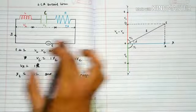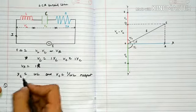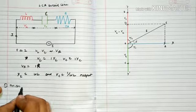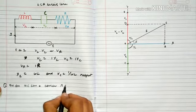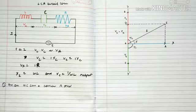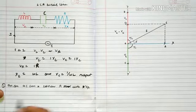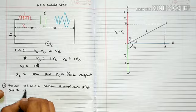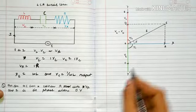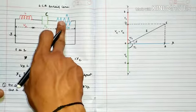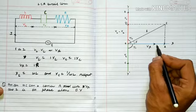This is a phasor diagram of LCR circuit. In an AC circuit, VR and I are in phase along OX. This is the resistance VR along the direction of I in OX direction.